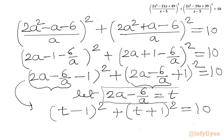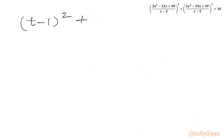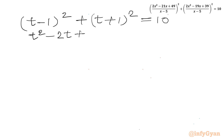Now let t = 2 minus 6/a, which is our substitution. Expanding using the (a minus b)² and (a plus b)² formulas, we write: (t minus 1)² plus (t plus 1)² equal to 10. Expanding gives t² minus 2t plus 1 plus t² plus 2t plus 1 equal to 10.